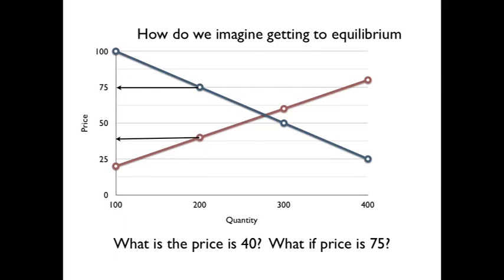So just looking at some other points: what if the price is $40 or $75? If the price is $40 — down here — we have excess demand, a lot more demand than supply. What happens with excess demand? There's a shortage. If the price isn't free to adjust, it gets addressed by rationing — people wait in line, or they wait until it's back on the shelf. Like overnight pressure for popular books: that was the only way to allocate it when the market wasn't clearing.